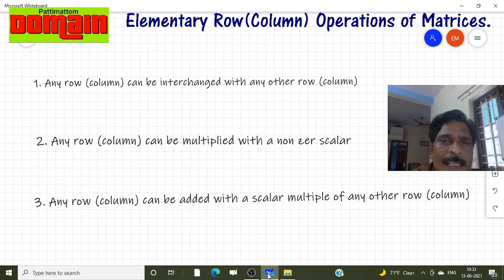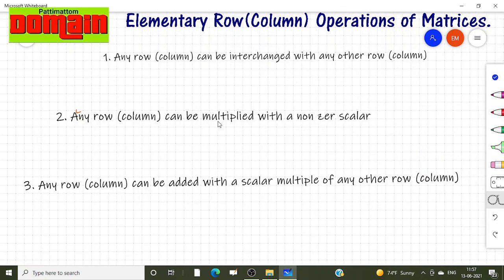Let us discuss them one by one here. The first elementary operation allowed is any row can be interchanged with any other row. Similarly any column can be interchanged with any other column.